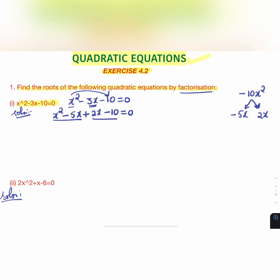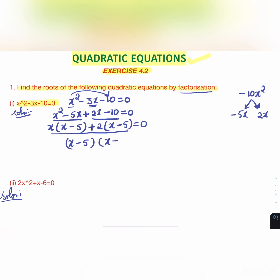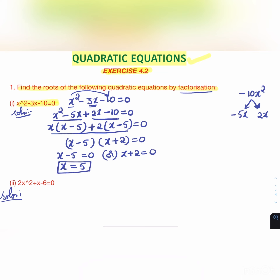We group the terms. From the first group, x is the common factor, giving x(x - 5). From the second group, 2 is the common factor, giving 2(x - 5). So (x - 5) is the common factor overall, giving (x - 5)(x + 2) = 0. Therefore x - 5 = 0 or x + 2 = 0, so x = 5 or x = -2. These are the roots of the given quadratic equation.